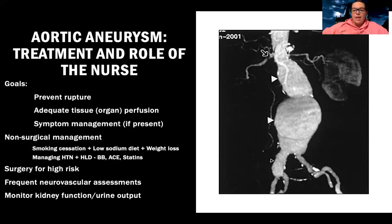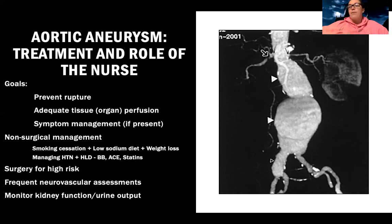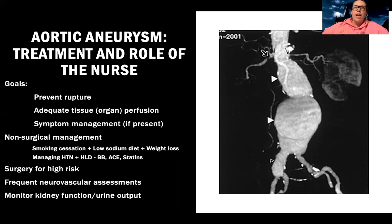If someone's at high risk, we'll do surgery to repair it. We also perform frequent neurovascular assessments because with an abdominal aortic aneurysm, a rupture or decreased blood flow will affect kidney perfusion and perfusion to the legs and feet — so good distal pulse assessment is critical. If the aneurysm is higher up, blood flow to the arm can be affected, requiring radial pulse checks. Monitoring urine output and labs is also very important.